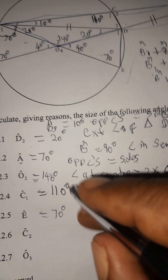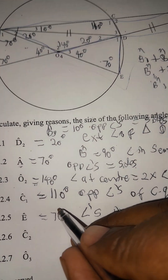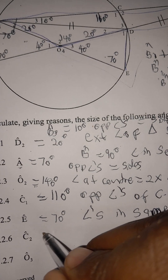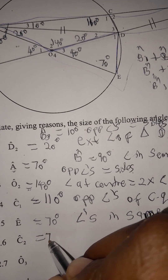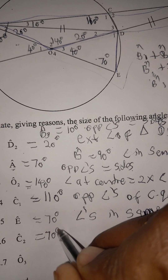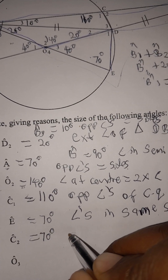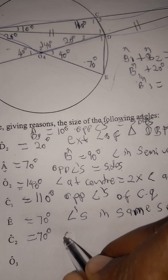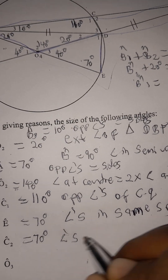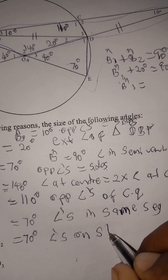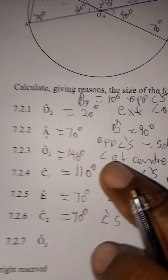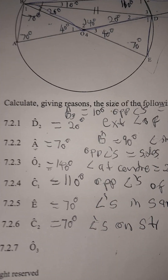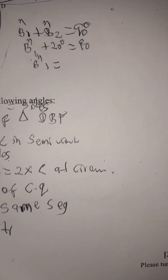For angle C2, worth two marks: C1 and C2 are angles on a straight line. So 180 minus 110 equals 70 degrees. Angle C2 equals 70 degrees. The reason: angles on a straight line.